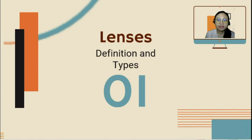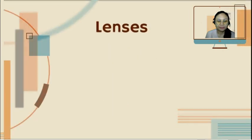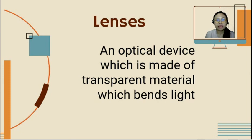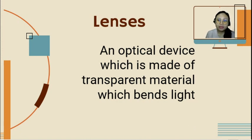Now let's discuss lenses — their definition and types. Lenses are an optical device made of transparent material which bends light. In our previous discussion, we discussed the bending of light. What property of light is the bending of light? It is refraction of light.